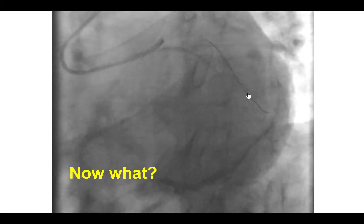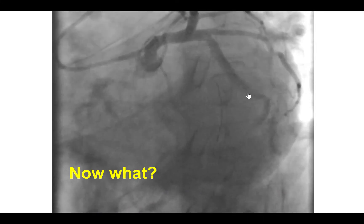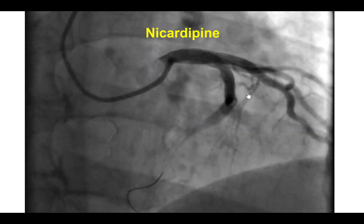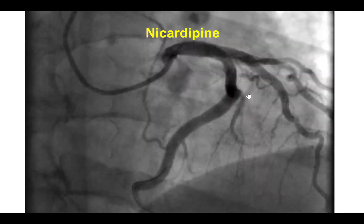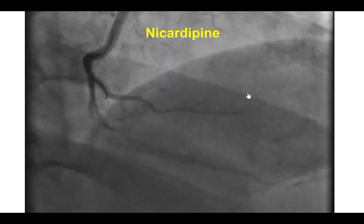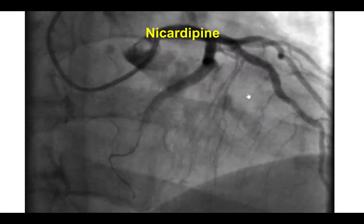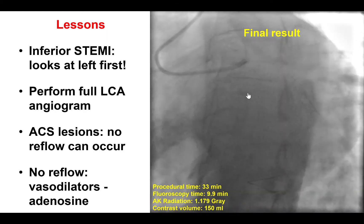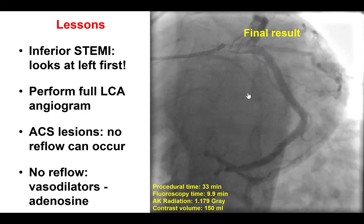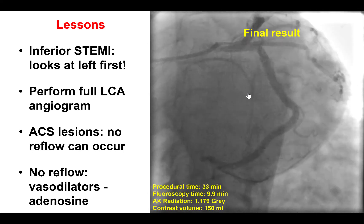How to approach this? The best therapy is with vasodilators. Fortunately, the patient remained hemodynamically stable, and therefore we were able to give nicardipine. We prefer nicardipine because of its longer half-life as compared to nipride, as well as its less hypotensive effect. After giving intracoronary nicardipine, we did have a restoration of TIMI-3 flow into the circumflex, and the patient had an uneventful recovery.